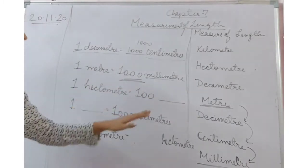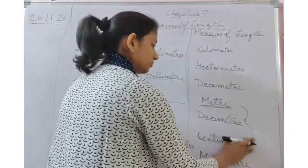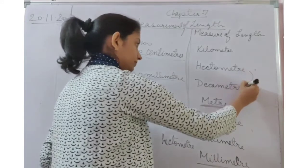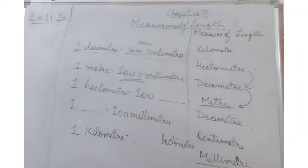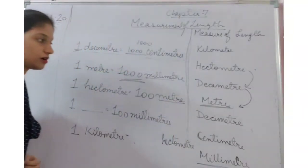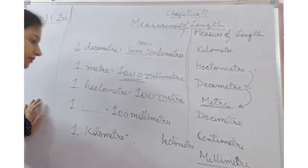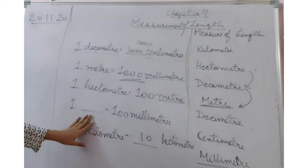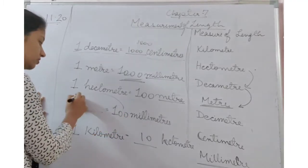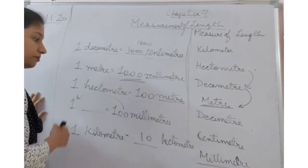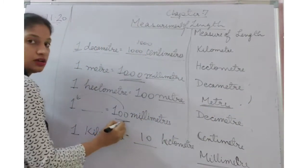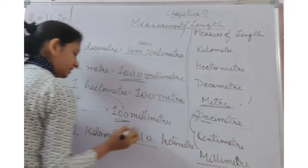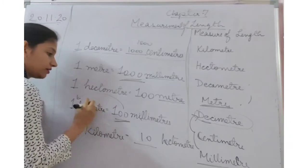Next: 1 hectometer equals 100 what? 100 means 2 zeros, so 2 steps down. Going 2 steps down from hectometer gives you meter. So 1 hectometer equals 100 meters. Now: 1 blank equals 100 millimeters — this time the blank is on the left side. Going from 100 to 1 means you are moving up the ladder. 100 means 2 steps up from millimeter, which gives you decimeter. So 1 decimeter equals 100 millimeters.